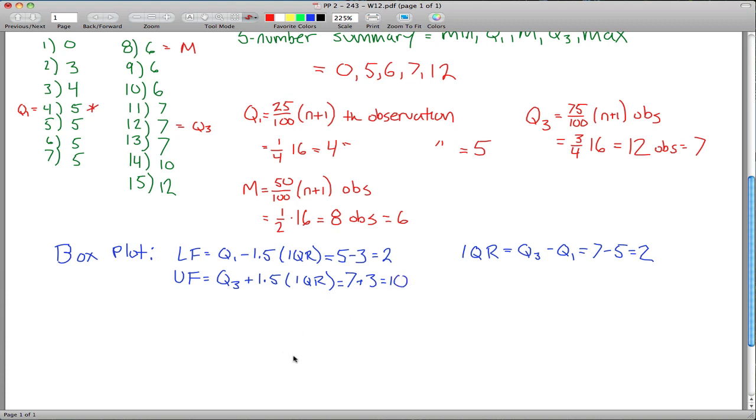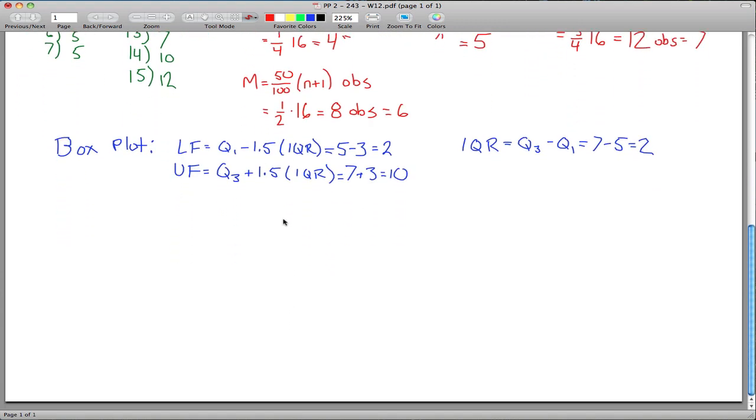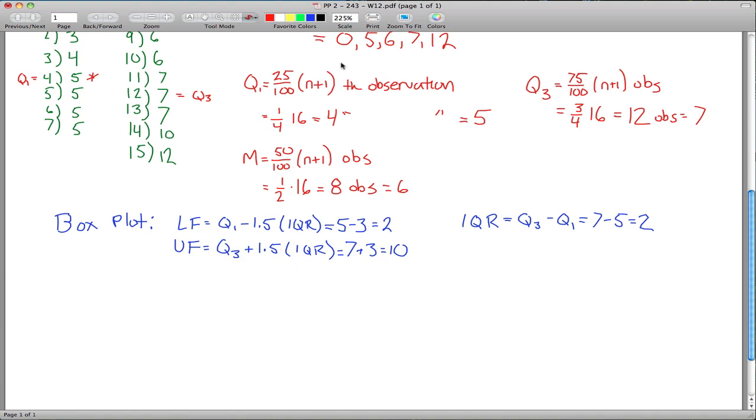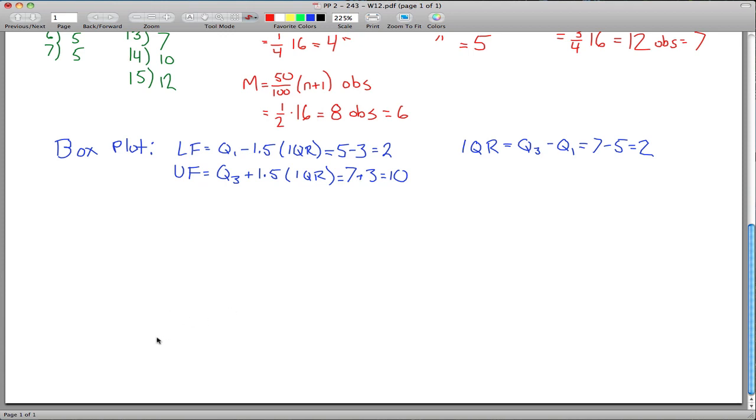And now finally, I think we have all the information we need to draw our box plot. The important points we'll need is the minimum, which is 0 up to 12. So maybe I'll make a number line down here, put the 0 over here, 1, 2, 3, 4, 5 right there, 6, 7, 8, 9, 10, 11, 12.